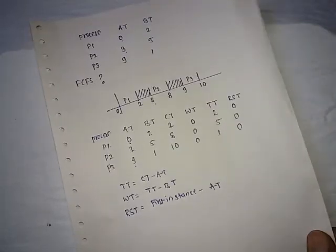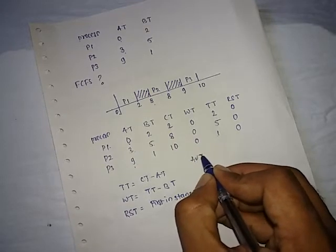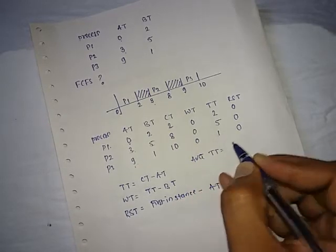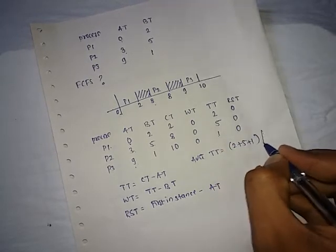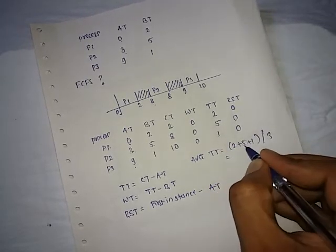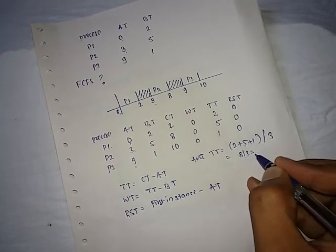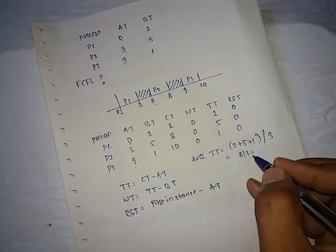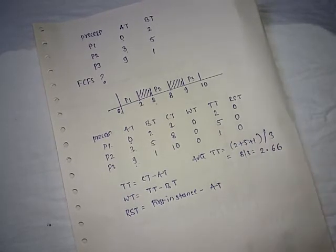The next part is to create average turnaround time, that is by this formula: 2 plus 5 plus 1 divided by number of processes, that is 3. That is 8, 8 divided by 3, and the answer is 2 point near about 6.6.